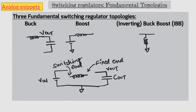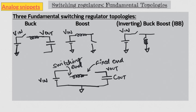Next we need to place a switch such that energy can be transferred from the input DC source to the inductor. In case of buck, when the switch is on the inductor is connected between input and output — energy flows from input to output and it also energizes the inductor in the process. In case of boost and IBB, the inductor is connected between the input DC source and ground. This period is known as the t_on period, during which the absolute current of the inductor ramps up linearly. As a final step we need to place a diode to catch the switching end of the inductor when the switch is turned off. The polarity of the diode should be such that it is off during t_on. In case of buck the switching end swings down, in case of boost it swings up, and in case of IBB it swings down.